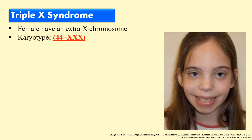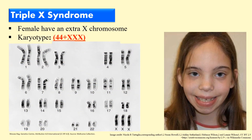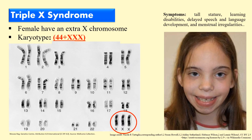Next is Triple X syndrome. As the name indicates, the female has one more X chromosome, so the karyotype is 44 plus XXX. In the karyotype you can clearly see the Triple X syndrome individual has an extra X chromosome — instead of the normal two X chromosomes in females, there are three. Due to this additional X chromosome, certain symptoms develop, which include tall stature, learning disabilities, delayed speech and language development, and menstrual irregularities.